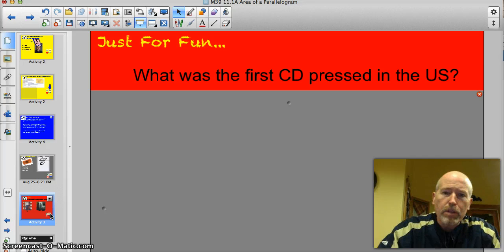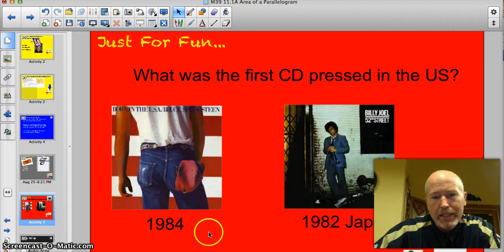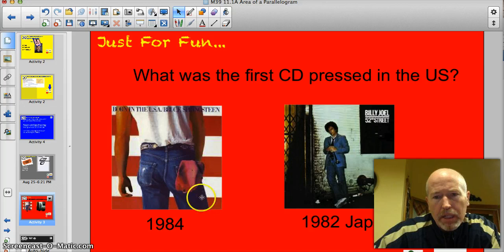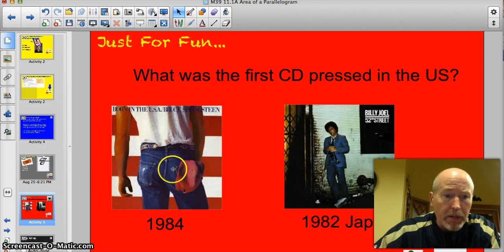All right. Back to the question. What was the first CD pressed in the United States? Survey says. Well, it was born in the USA by Bruce Springsteen. It was in 1984. It was a monster CD or monster album, I still want to call it. The actual first CD ever produced or pressed internationally was Billy Joel's 52nd Street in 1982. So we're a couple years behind that.